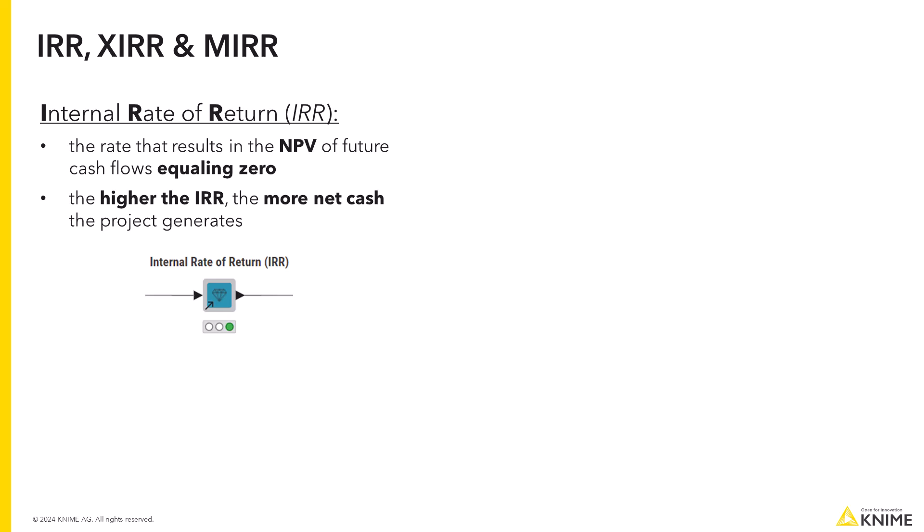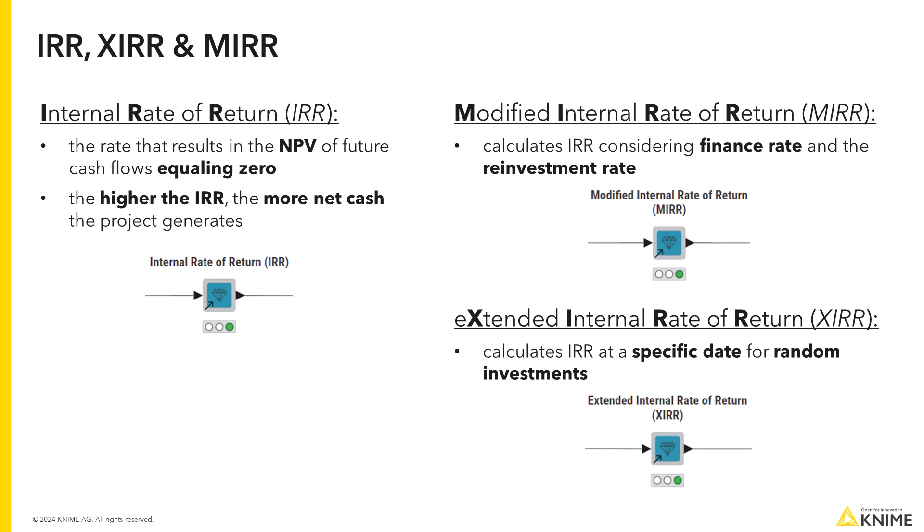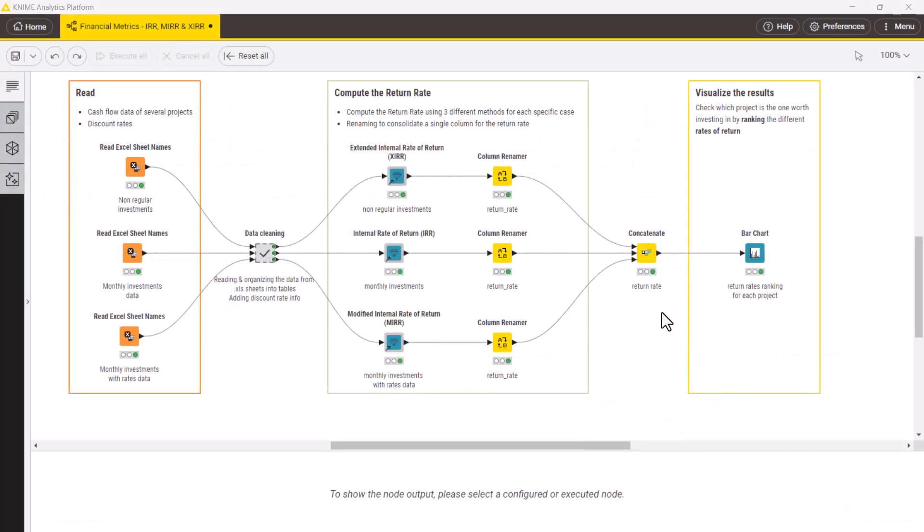For ease of use, we made three components available on the KNIME Community Hub to automate the calculations of the IRR financial metrics: the components IRR, MIRR, and XIRR. MIRR, the modified internal rate of return, calculates the IRR taking into account the finance rate and the reinvestment rate. XIRR, the extended internal rate of return, calculates the IRR at a specific date for random investments.